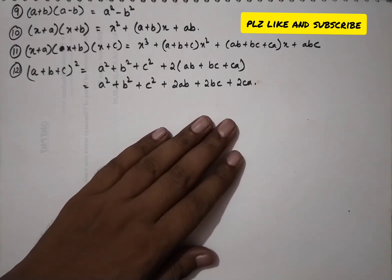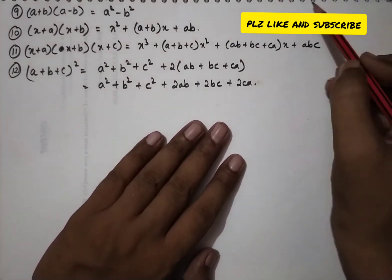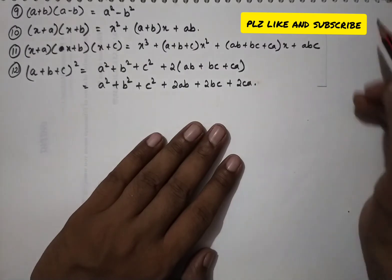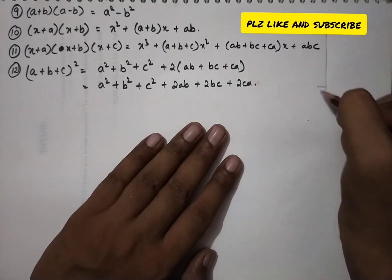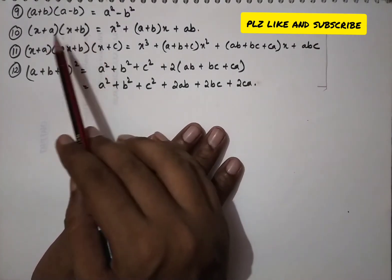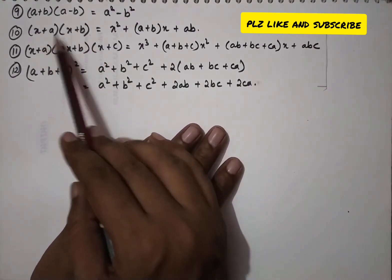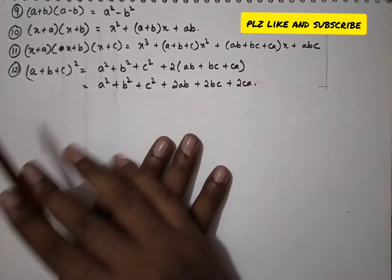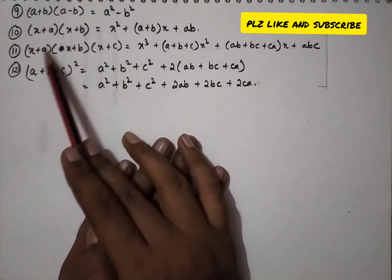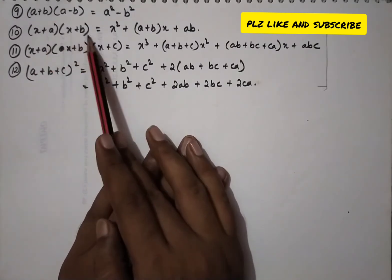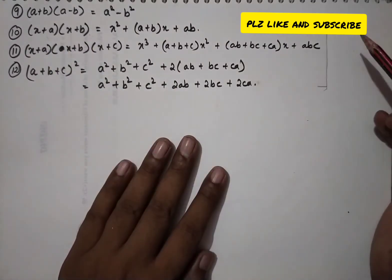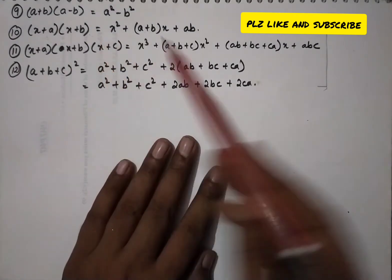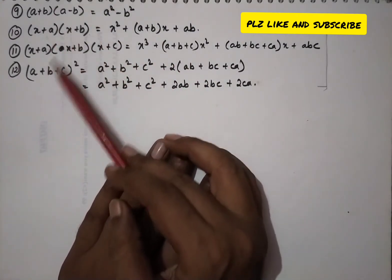One important thing for the identities involving (x + a)(x + b)(x + c) and (a + b + c)²: we must use the actual signs of a, b, and c as given in the question. Otherwise you will end up with four different identities. So always use the sign of each variable as it appears.